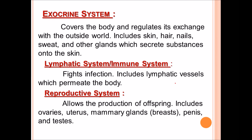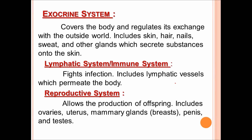The reproductive system allows for the production of offspring and includes ovaries, uterus, mammary glands, penis, and testis. This concludes the discussion of the 10 types of human body systems and their definitions. I hope you enjoyed this video — thank you, bye bye.